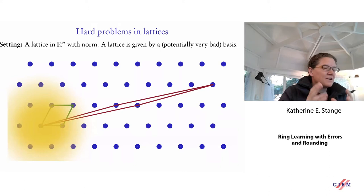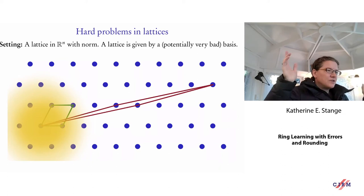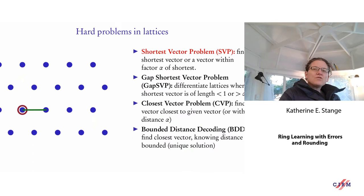The dimension n is the security parameter — that's what we use to measure how hard the problem is. This picture is misleading because it's only two dimensions, but of course it's hard to draw. So how could you turn this observation about good and bad bases into hard problems for cryptography?